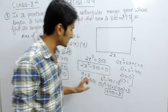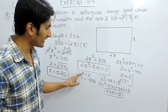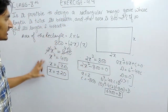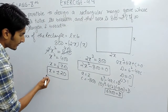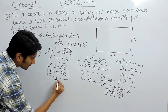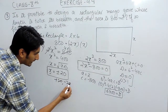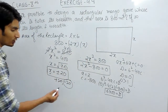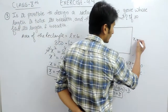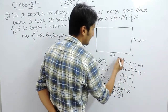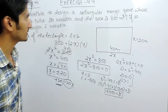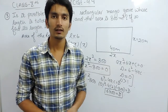Since D is greater than 0, the roots of this equation are real, meaning the value of x is real. So this condition is satisfied. We already found the value of x as either plus 20 or minus 20. Since the breadth of any rectangle cannot be negative, the breadth must be 20 meters, and the length is 2 × 20 = 40 meters. So we have found the dimensions of this grove.